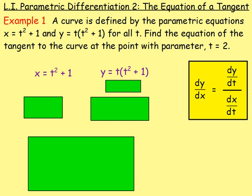Example 1. A curve is defined by the parametric equations x equals t squared plus 1 and y equals t bracket t squared plus 1, for all t. Find the equation of the tangent to the curve at the point with parameter t equals 2. We've got a curve and we want the equation of the tangent. Think gradient-point-equation. To get the gradient, differentiate — find dy by dx. When we have parametric equations, we differentiate both x and y with respect to t: dx by dt and dy by dt.